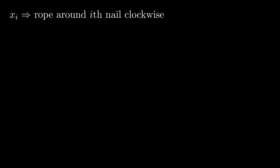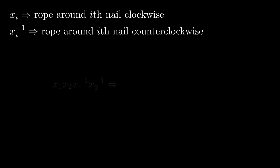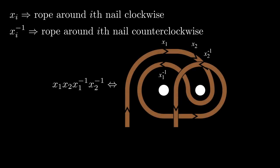For example, x sub 1 x sub 2 x sub 1 inverse x sub 2 inverse is a valid word. Now we have to pay attention to what each symbol represents so that it helps us solve the puzzle. We will use the following notation. x sub i will represent wrapping the rope around ith nail clockwise and x sub i inverse will represent wrapping the rope around ith nail counterclockwise. Having established the significance of each symbol, let's see what the word previously given as an example really represents. It is, indeed, the answer for the two-nail puzzle.